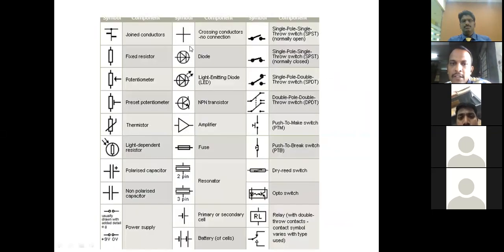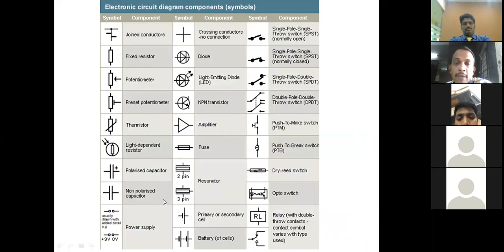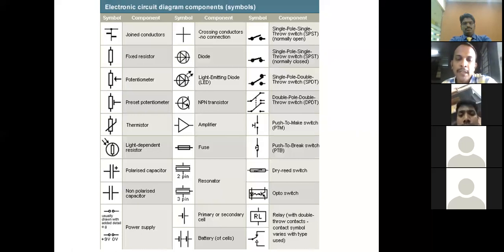Coming to electronic circuit components: in circuits we use different kinds of representations. We have conductors, resistors, potentiometers (variable resistance), preset potentiometers, thermistors (resistance changes with temperature), and light-dependent resistors (resistance changes with incident light). We have electrolytic capacitors — polarized, with a positive long wire and negative short wire — and non-polarized capacitors. We have power supplies shown as two terminals: positive and negative for DC, or phase and neutral for AC. Other common representations include diodes, LEDs, NPN transistors, amplifiers, operational amplifiers, fuses, resonators, oscillators, batteries, and battery series.